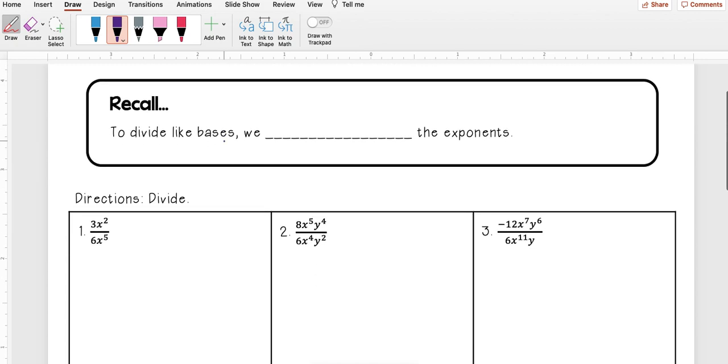So if you recall, to divide like bases we subtract the exponents. So if I have a base of like say x cubed over x squared, I would just subtract those exponents and I'd get x to the first or I can just write that as x.